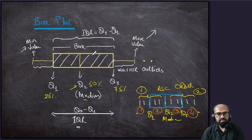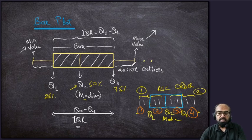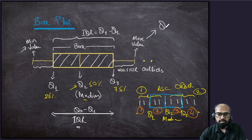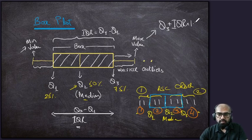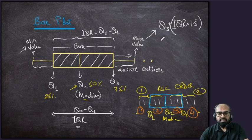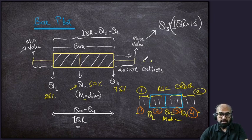To find the maxima threshold, we calculate Q3 plus 1.5 times IQR. This is how the maxima value is calculated. Since this is a calculated value, some actual data points may remain beyond this threshold. For example, these two points would be considered as outliers on the maximum side.